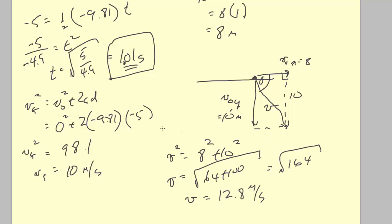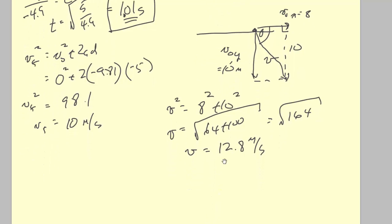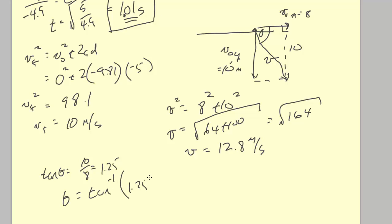For the angle of depression: opposite over adjacent is tangent, so tan θ = 10/8 = 1.25. Therefore θ = arctan(1.25) = 51.3 degrees. The simulation gave 50.7 degrees — we're about half a degree off because I rounded the vertical velocity to 10 when it's actually closer to 9.9. Being less casual would get us very close to the simulated values.